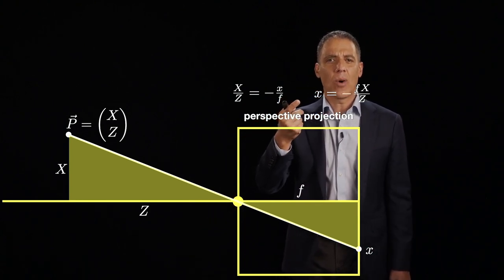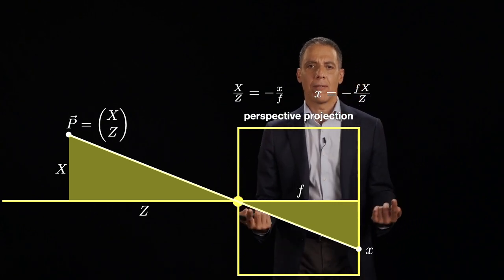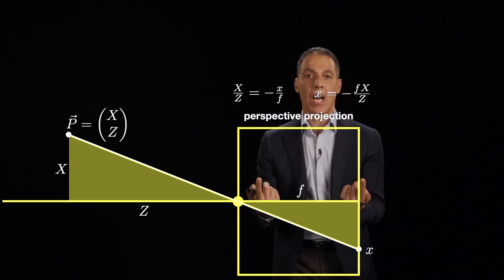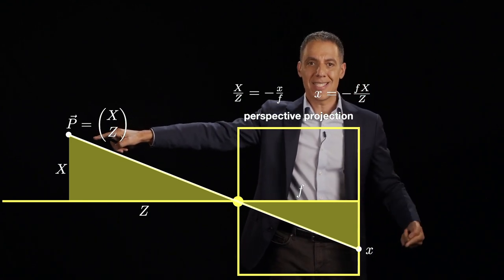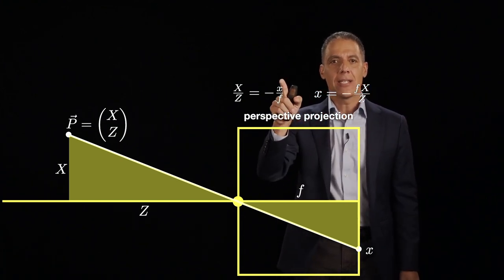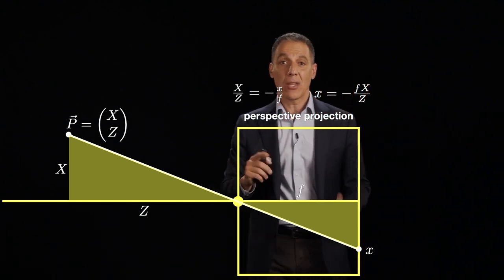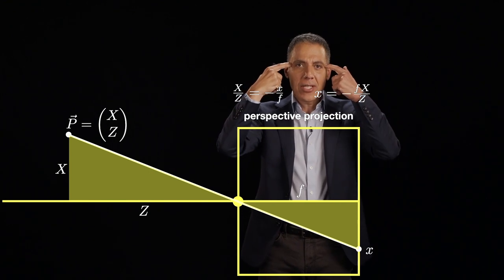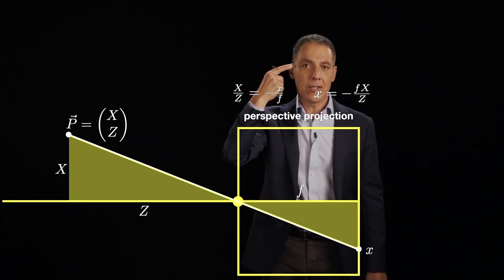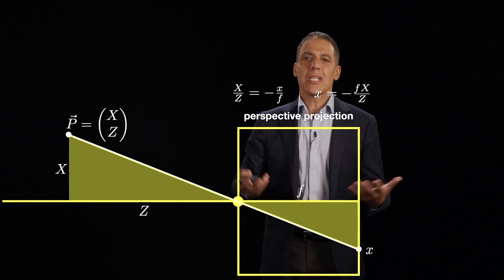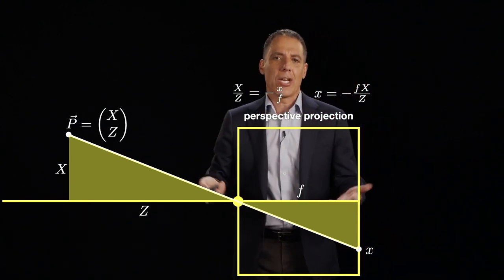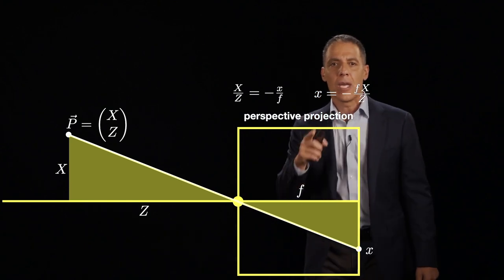Forget the minus sign for a moment — the ratio just says that similar triangles have equal height-to-length ratios. The minus sign comes from inversion: both positive X coordinates point in the same direction, but the image coordinate is negative because the ray gets inverted passing through the aperture. This may seem weird — images are upside down — but the human eye and brain do the same thing. On the retina everything is upside down; your brain just ignores it. In a digital camera we simply invert the image on the way out.